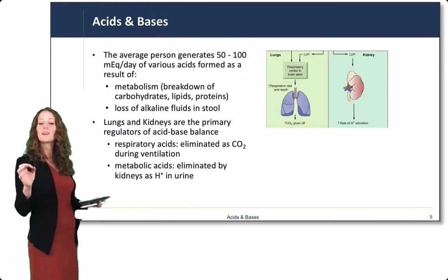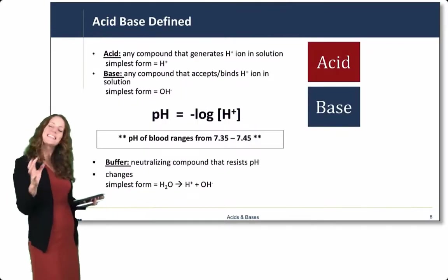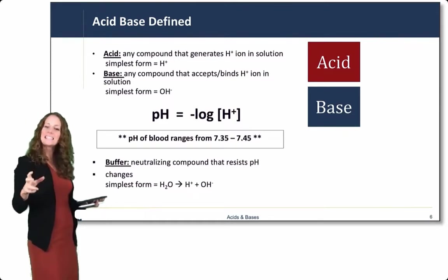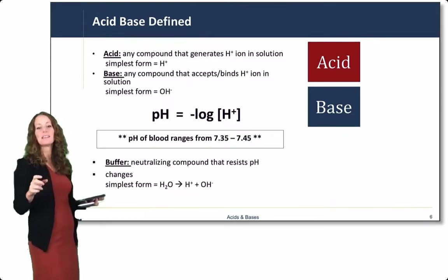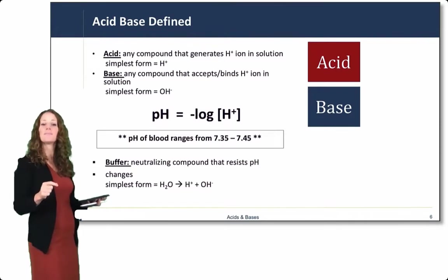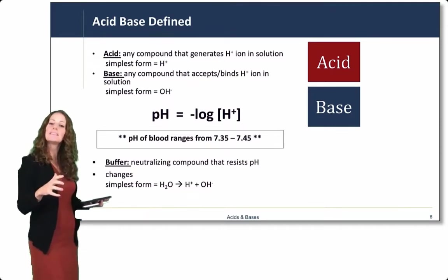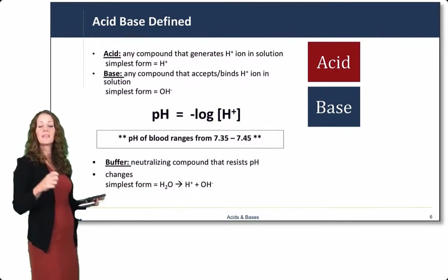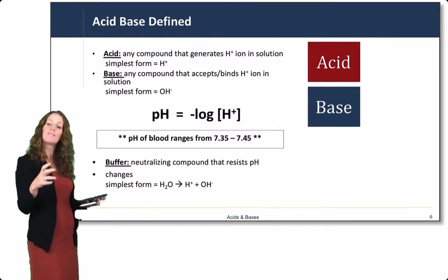So respiratory acids are eliminated as CO2 during ventilation, and metabolic acids are eliminated by the kidneys as protons in the urine. Let's think back to your prerequisites of chemistry from many years ago. An acid is any compound that generates hydrogen ion in solution. A base is any compound that accepts or binds hydrogen ion in solution.